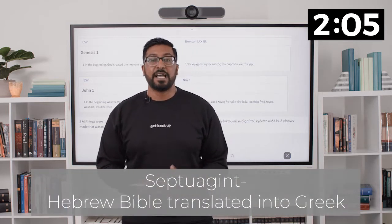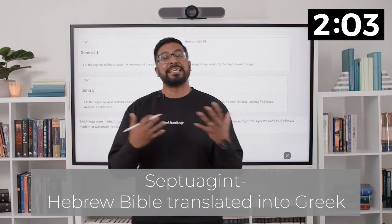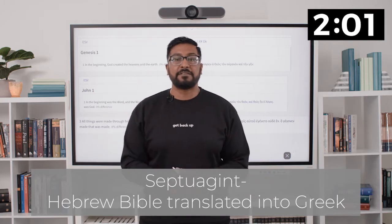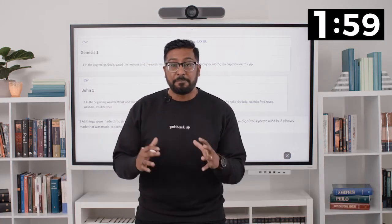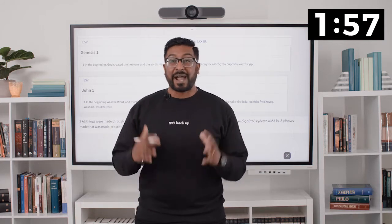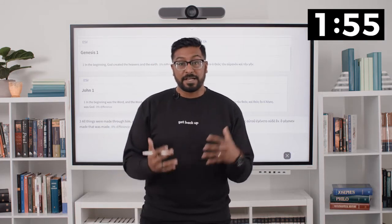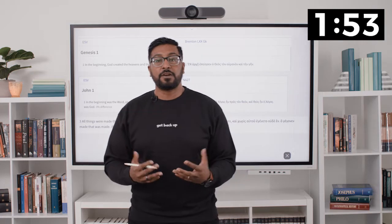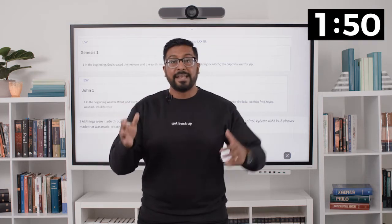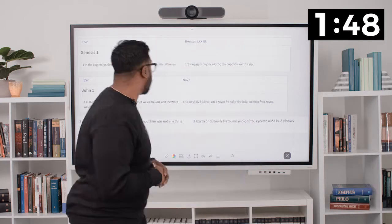The Septuagint is the Hebrew Bible translated into Greek. Fun fact: most of the disciples and the authors of the New Testament are actually quoting directly from the Septuagint. This comes in really important when we look at John chapter 1 next to Genesis chapter 1. Let's do that now.